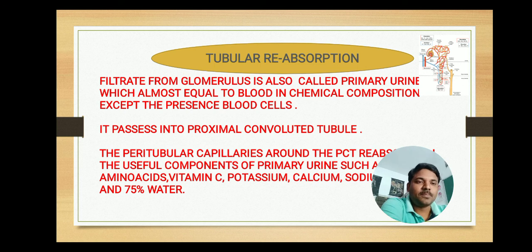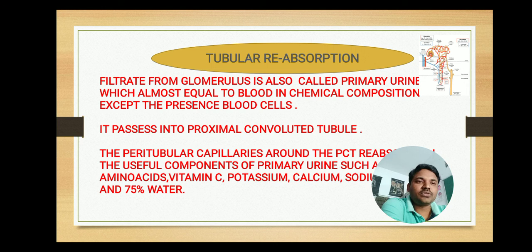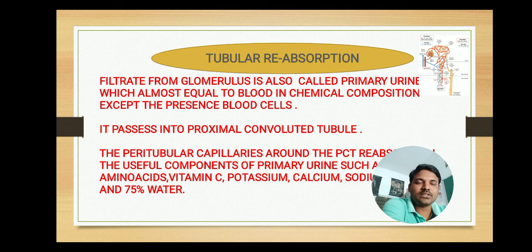The filtrate enters into the tubular part, and the first part is the PCT — proximal convoluted tubule. In the second step, tubular reabsorption, whatever was filtered in the Bowman's capsule can be reabsorbed. The filtrate from the glomerulus is also called primary urine, which is almost equal to blood in chemical composition except for the presence of blood cells.